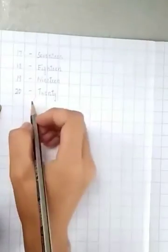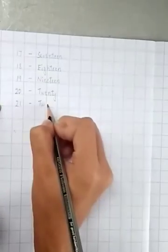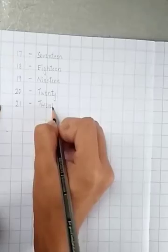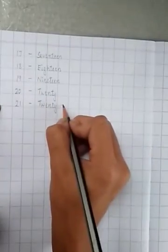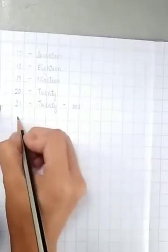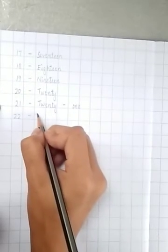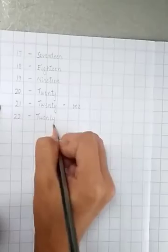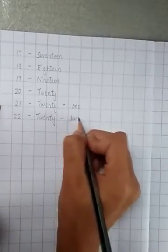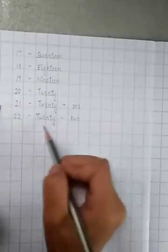We will write down like this: 21 - Twenty-one, 22 - Twenty-two. Always put a hyphen between 20 and 1 and 20 and 2.